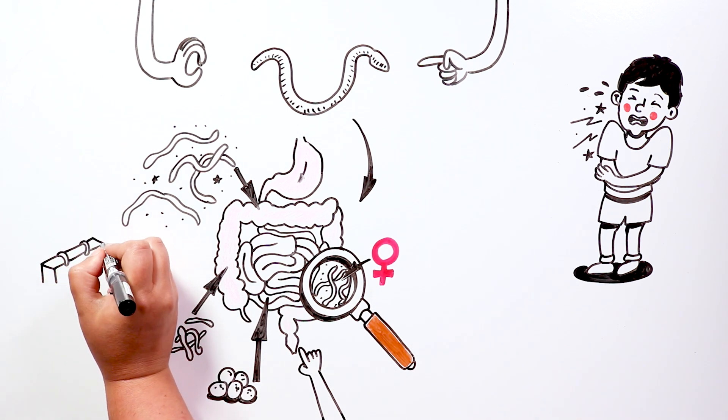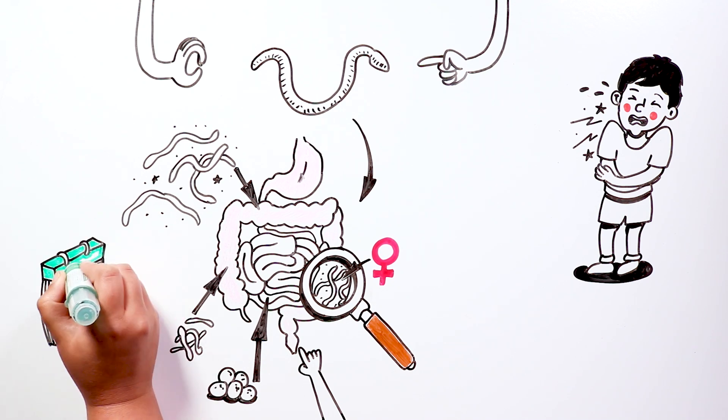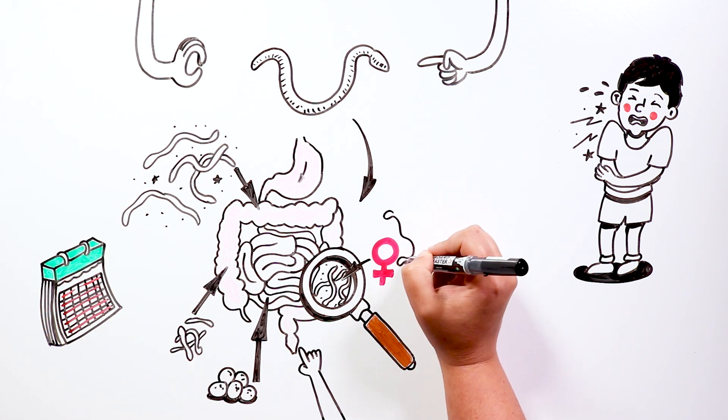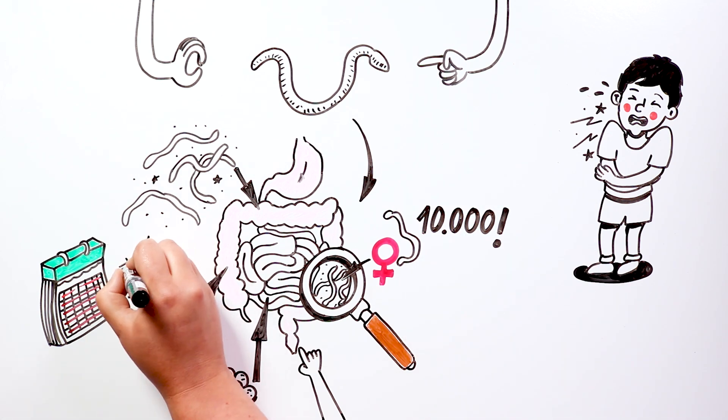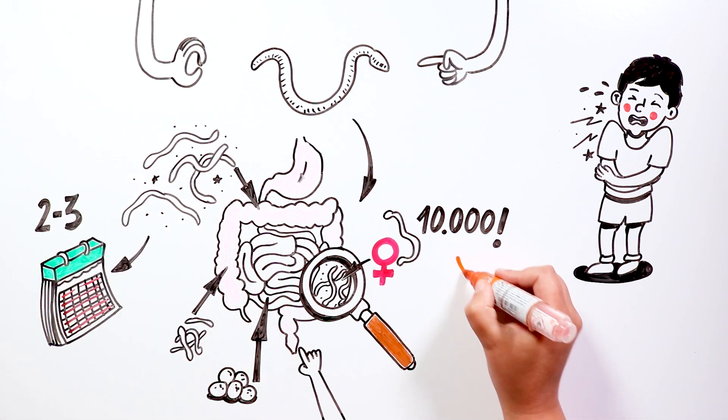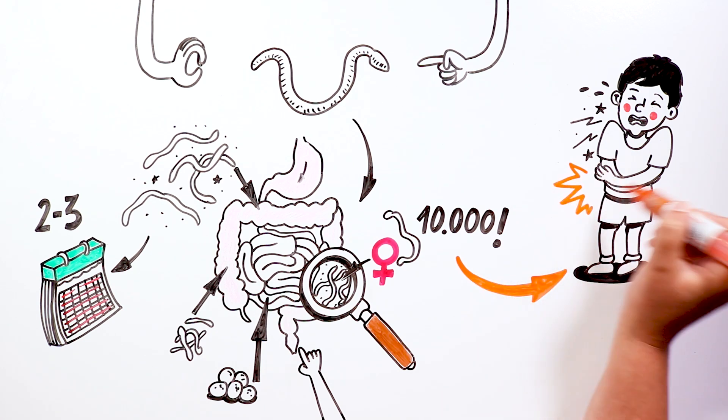The time that elapses from the ingestion of the eggs until the adult worms lay theirs is approximately one month. Each female earthworm can lay about 10,000 eggs. Adult worms live for 2-3 months, and infected people may have several or hundreds of adult worms in their intestines.